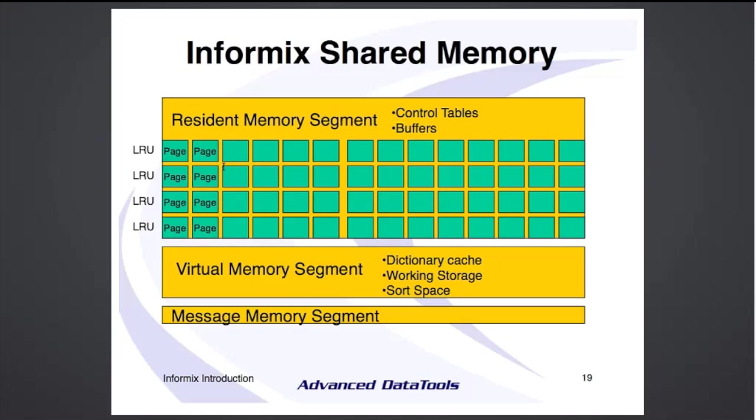The buffers are where Informix caches data that people are using. If somebody does a select, that data is brought into the buffer, and the next person who wants that same data can get it from the buffer. I was working with a client that had 96 gigs of RAM and their database was about 80 gigs — we had the whole database running in memory, super fast. You want as much memory for buffers as possible.